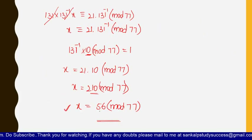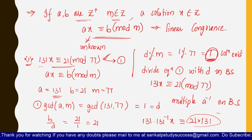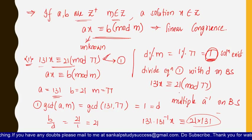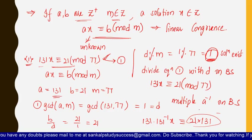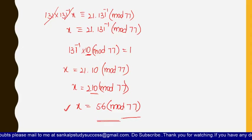Always divide equation 1 by d on both sides, then multiply by a inverse on both sides. Here d = 1, so the equation remains the same, and on further simplification we get x ≡ 56 (mod 77). This completes the first linear congruence problem.